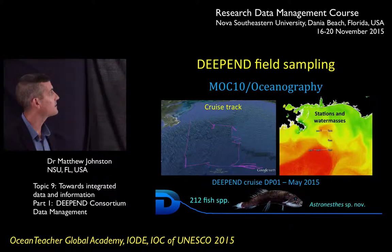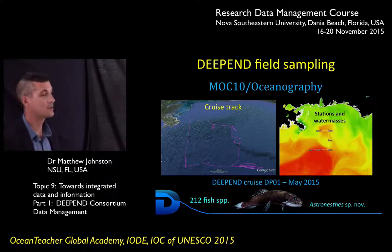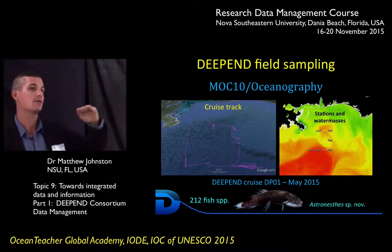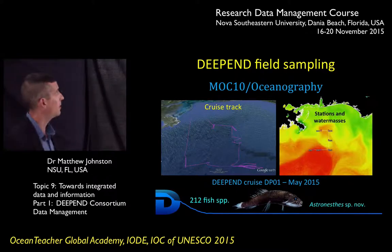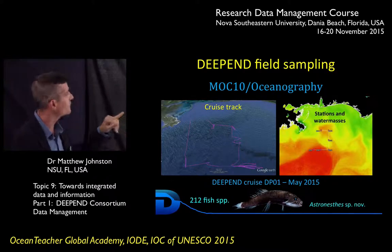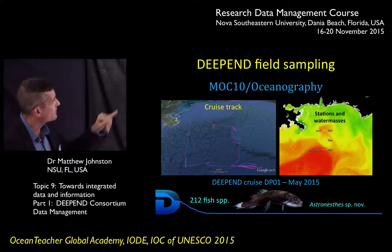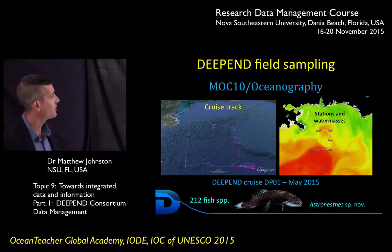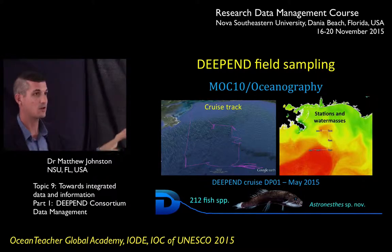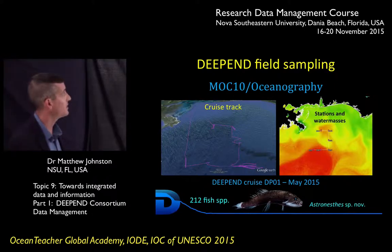One of the main components is to go out and do sampling. We're using something called a MOCNESS net — a series of nets that open and close at different depths so that we can sample throughout the water column. We've done two cruises so far. This is the cruise track of the first one, where we sampled six different stations. In just that one initial cruise, we collected 212 different species of fish, including one new species not previously documented. There are a lot of unknowns out in these deep waters.